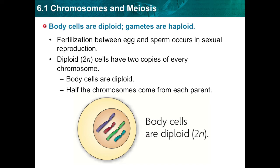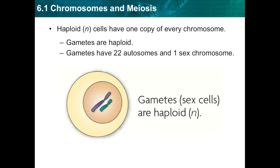Body cells are diploid and gametes are haploid. Sexual reproduction involves two gametes — an egg and a sperm — joining together. Fertilization happens when the egg and sperm actually combine; the nucleus of the egg combines with the nucleus of the sperm to form one nucleus. This new nucleus must have the correct number of chromosomes, which is 46 for humans. Therefore, the egg and sperm each must have half the number of chromosomes, which is 23 for humans.